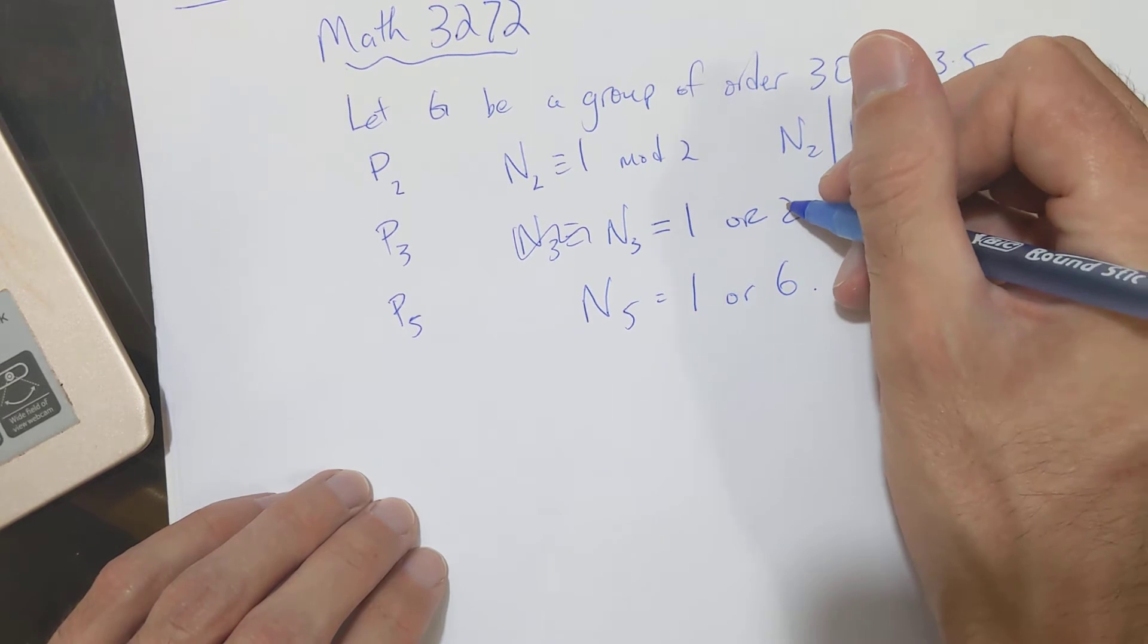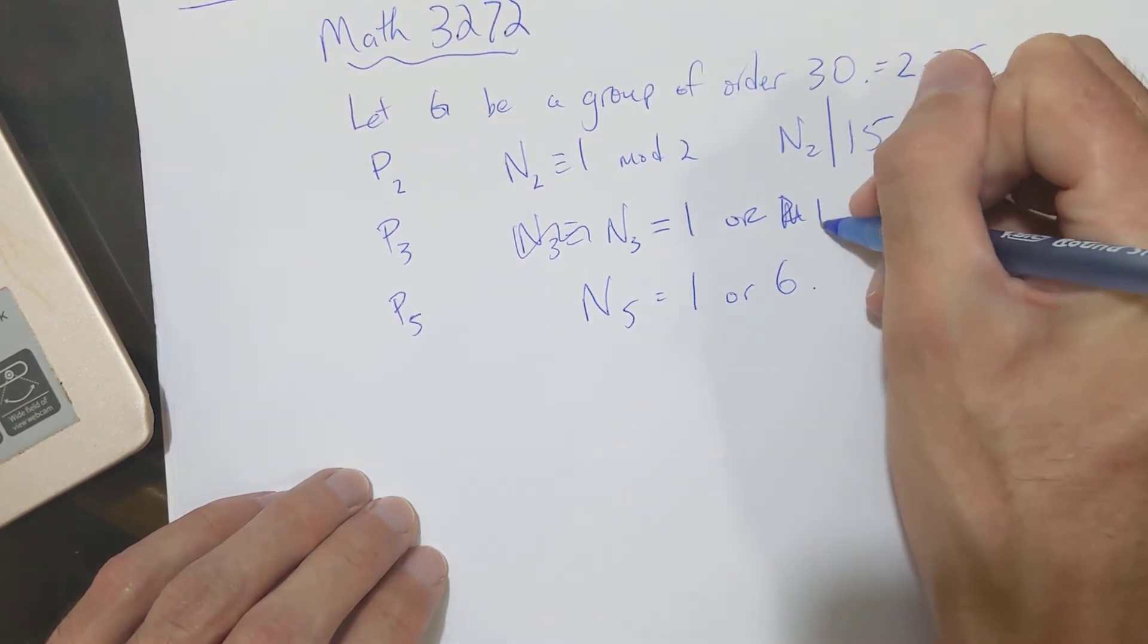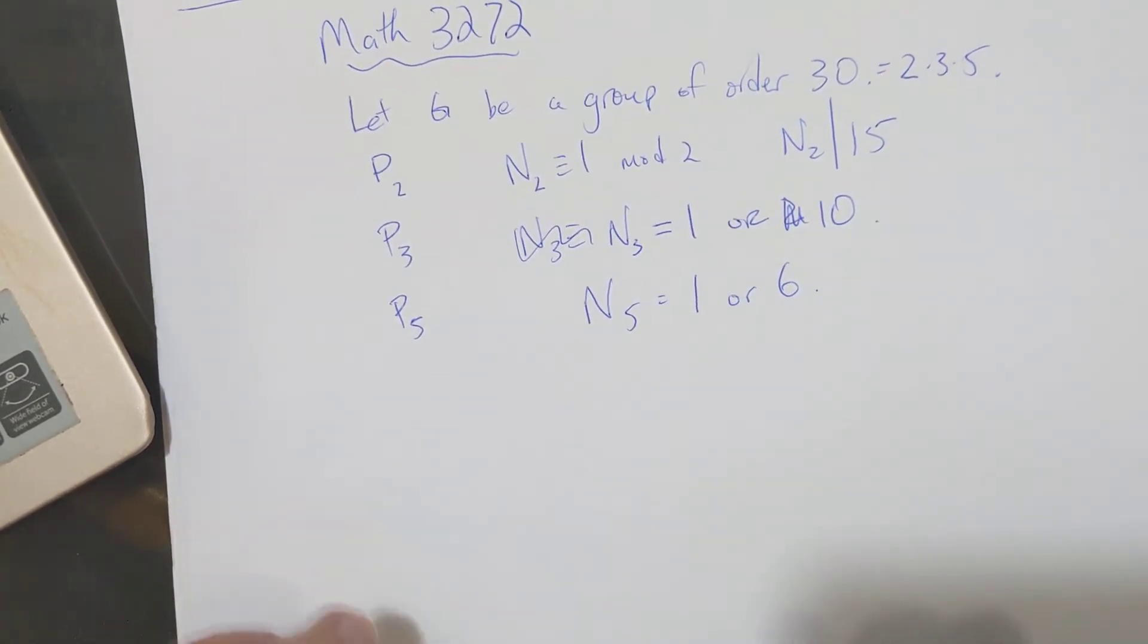and we found out that N5 was either 1 or 6. Well, here, N3, I wrote 2, but it should be 10. Sorry about that. Okay.